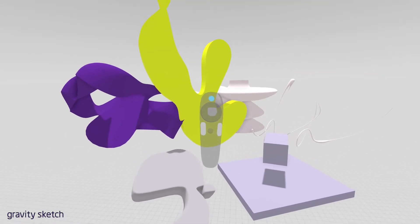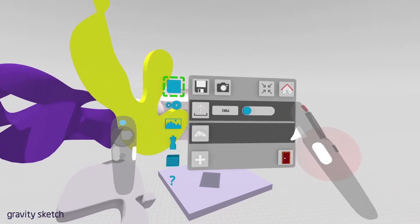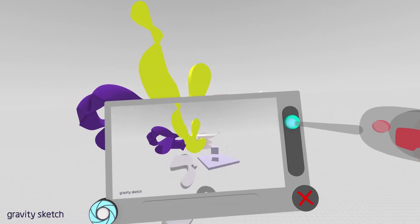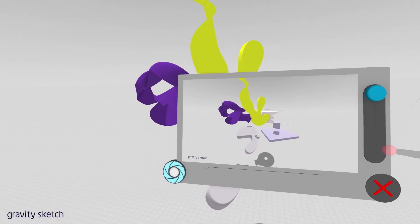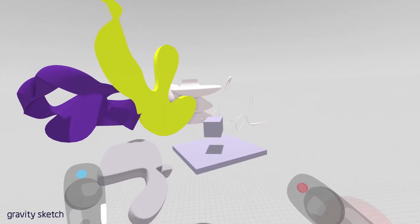So pushing the blue button on the non-drawing hand accesses the save menu. The save menu allows you to take a screenshot. So we'll go ahead and do that. So here you can change your perspective. Push the blue button on the non-drawing hand to take the screenshot. And X to escape.